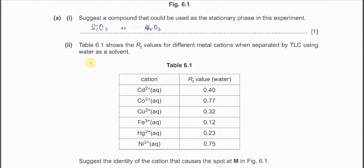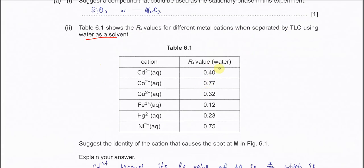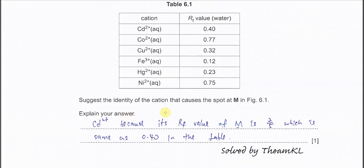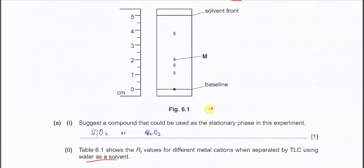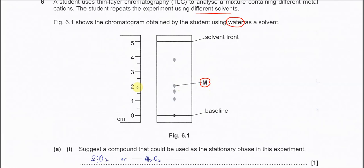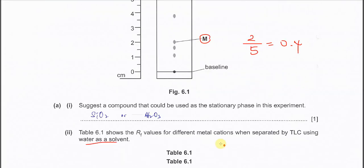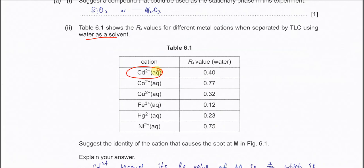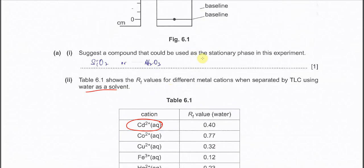Part 2, table 6.1 shows the RF values for different metal cations when separated by TLC using water as a solvent. The question asks: suggest the identity of the cation that caused the spot at M in figure 6.1. The spot is at 2 cm, so 2 over the solvent front, which is 2 over 5, equals 0.4. Checking the table, 0.4 is cadmium.